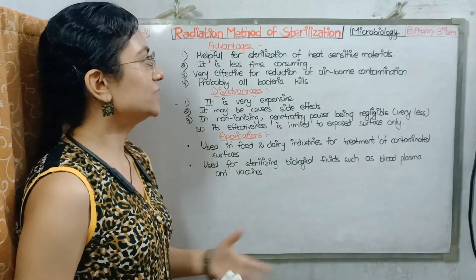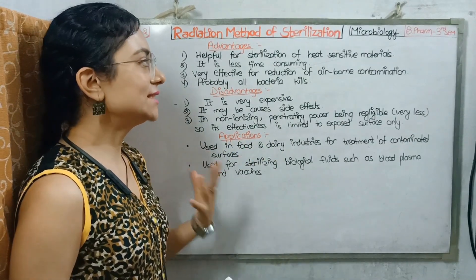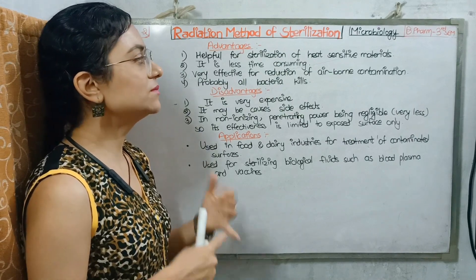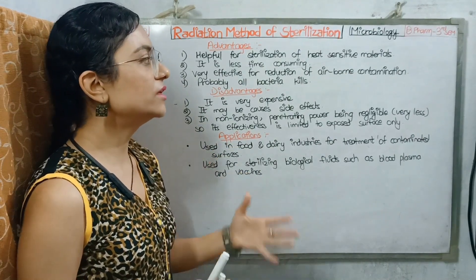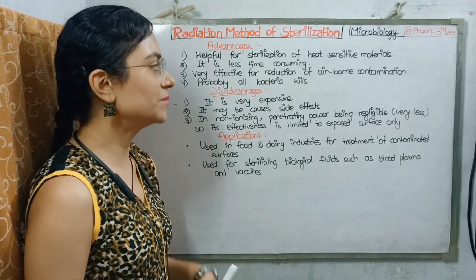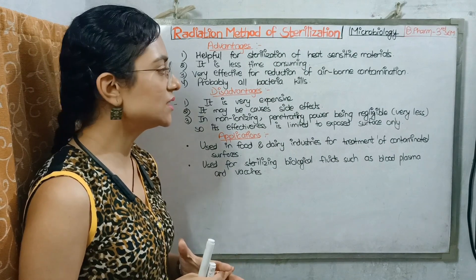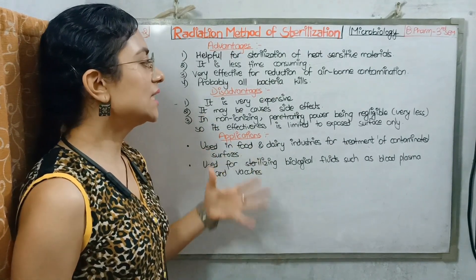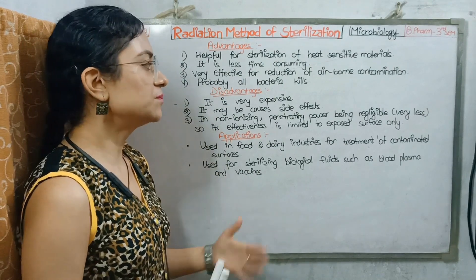The advantages of the radiation method are: heat-sensitive materials can be sterilized, it is less time consuming, it is effective for reducing airborne contamination, and bacteria are killed effectively. The disadvantages are: the method is very expensive, it can cause side effects, and non-ionizing radiation has very limited penetrating power, making its effectiveness and the exposed surface area limited.